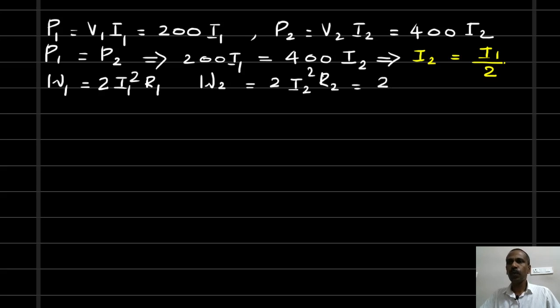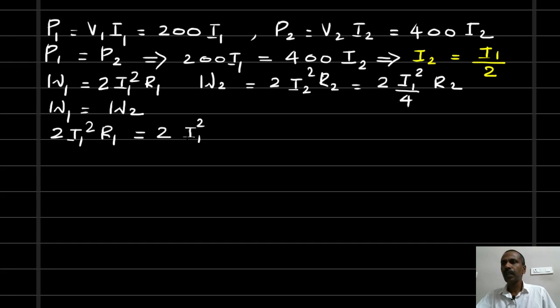W2 equals 2 into I2, which is I1 by 2, so it is I1 square by 4 into R2. It is given that W1 equals W2. In both cases, the power loss is same. So we can write 2 I1 square R1 equals 2 into I1 square by 4 into R2. So here 2 I1 square gets cancelled, R1 equals R2 divided by 4, or we can write R2 divided by R1 is equal to 4.